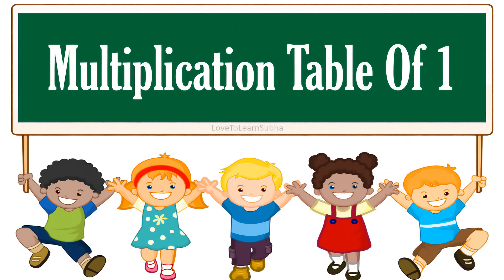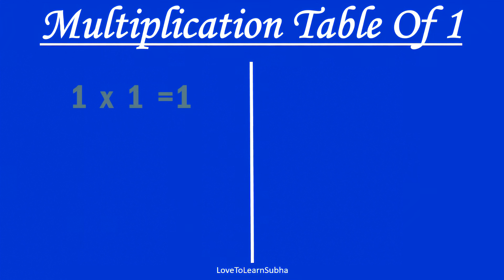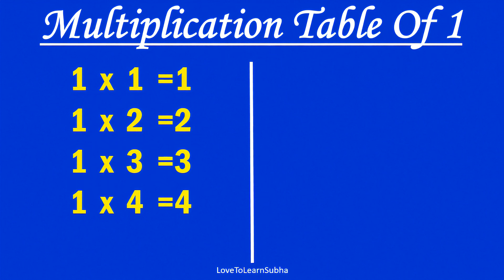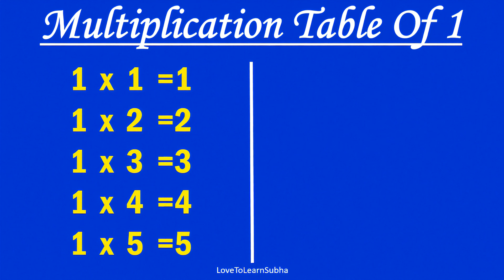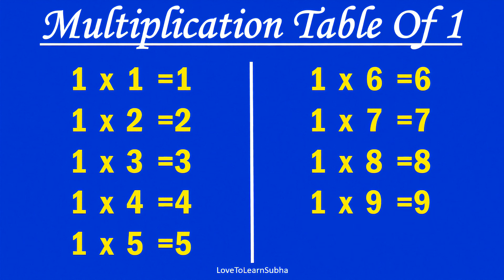Multiplication table of 1. 1×1 is 1, 1×2 is 2, 1×3 is 3, 1×4 is 4, 1×5 is 5, 1×6 is 6, 1×7 is 7, 1×8 is 8, 1×9 is 9, 1×10 is 10.